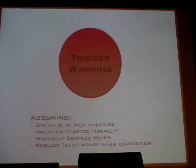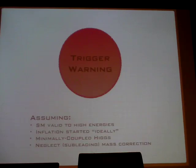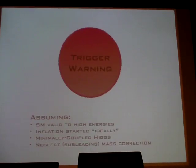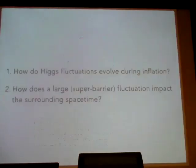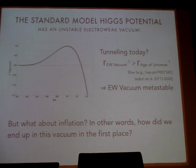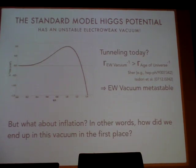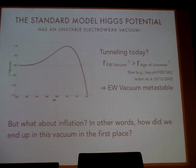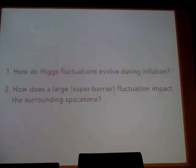I'm not going to deal with non-minimal curvature couplings or higher-order terms in Einstein's equations, and I'm also going to neglect subleading mass corrections. Notably, in this plot you can see there is no usual Mexican hat shape — I'm neglecting things like mass corrections that are subleading. I'll talk a little bit about that at the end if I get time.